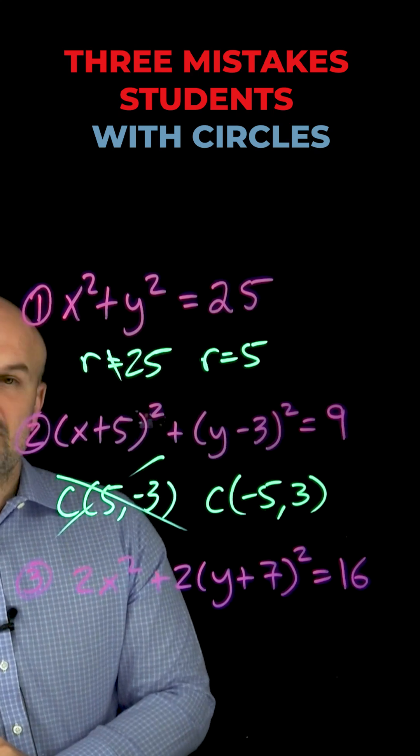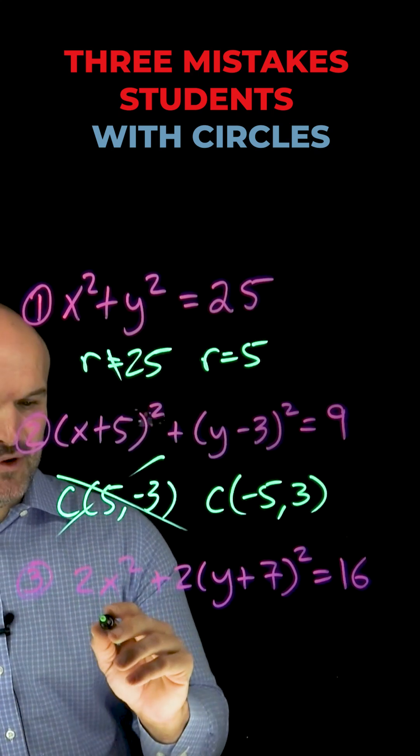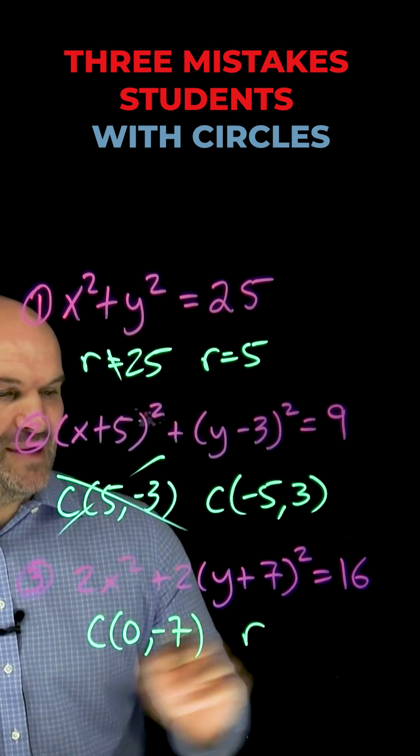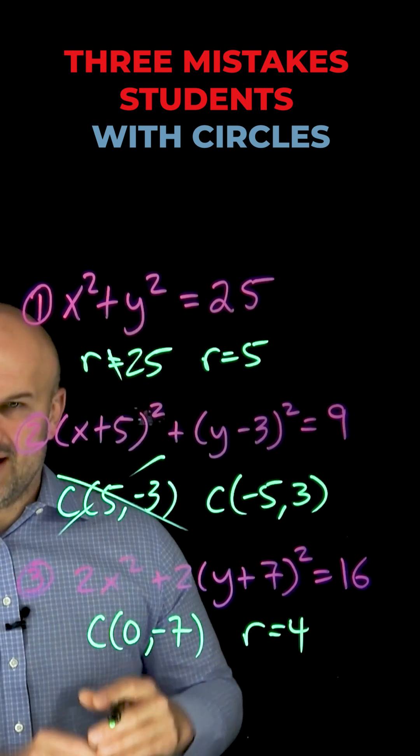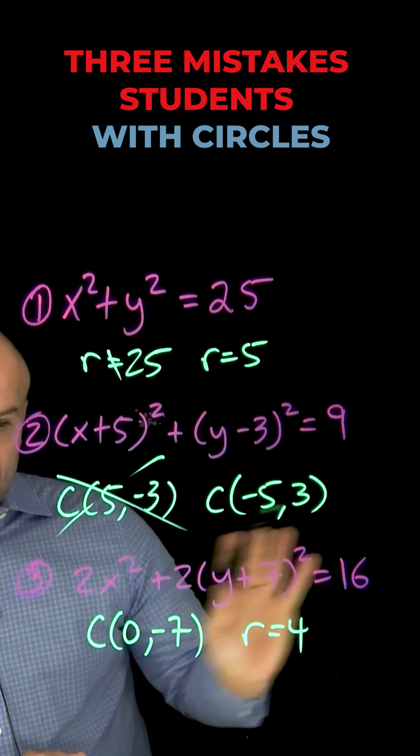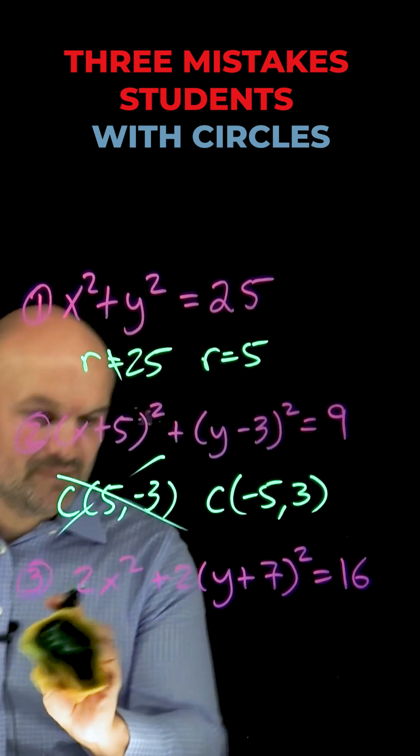Now, the last example, what students will make is they see an equation like this and they say, all right, I'm not going to make this mistake anymore. The center is going to be at 0, negative 7. Got that. And the radius is going to be at 4. Well, you partially had it. The center is going to be at 0, negative 7. However, before you go ahead and identify the radius, you have to make sure you have it in standard form.